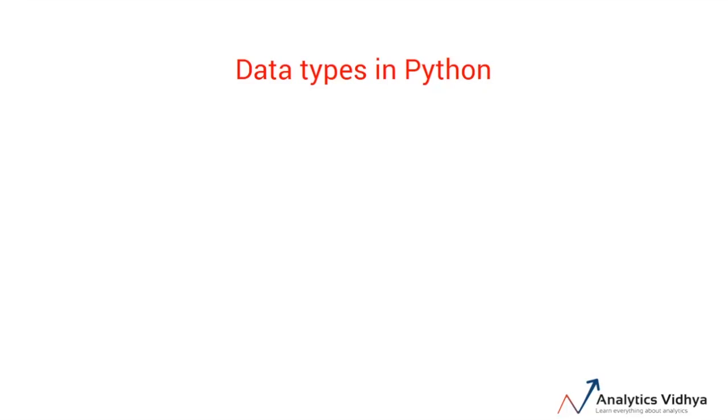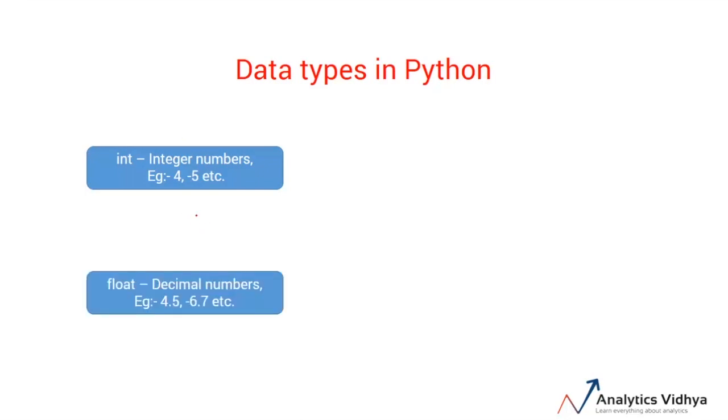For example, a variable can contain int data, that is the integer numbers, for example 4, -5, etc. Variables can also store decimal type numbers using the float data type, so they can store numbers like 4.5, -6.7, etc.